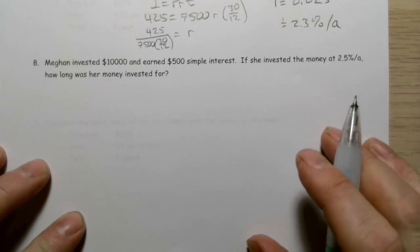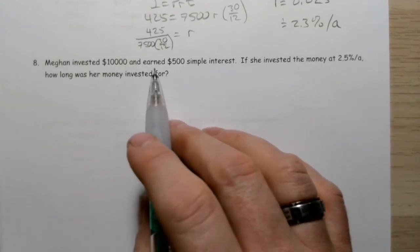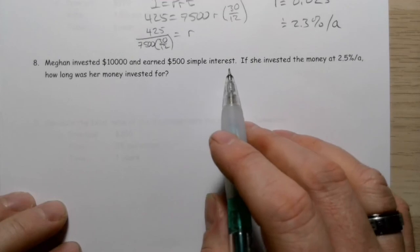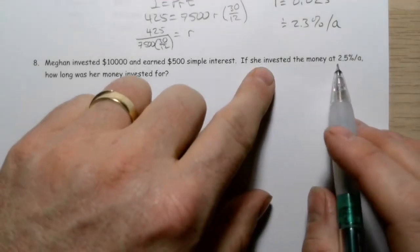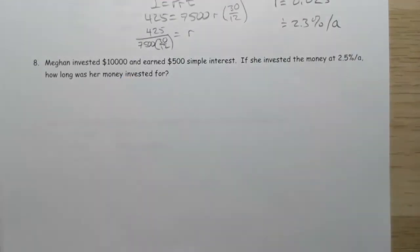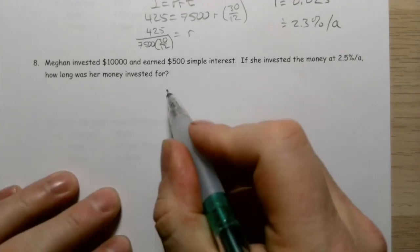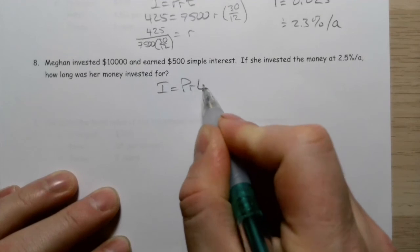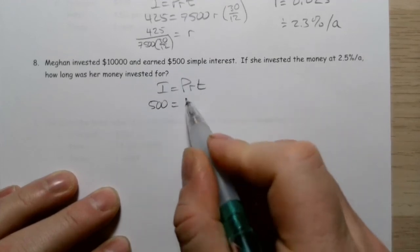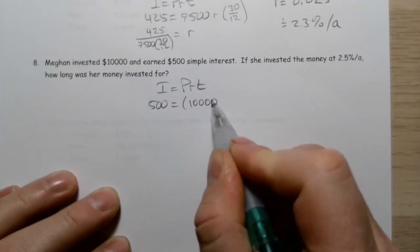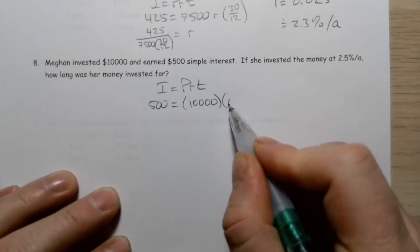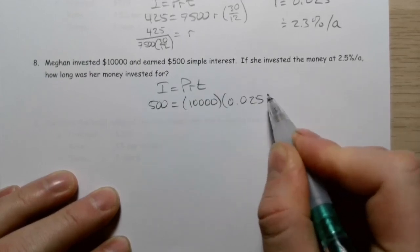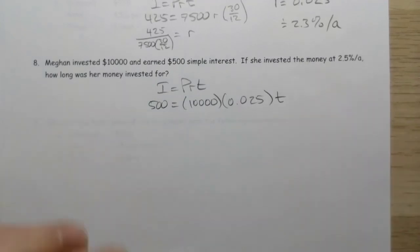For this last question, Megan invested $10,000 and earned $500 in simple interest. If she invested the money at 2.5% per annum, how long was her money invested for? Another example where we're looking for something other than the interest. I = PRT: we got $500 in interest, the principal was $10,000, it was 2.5% or 0.025, and I don't know the amount of time.